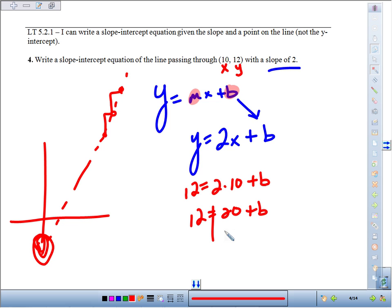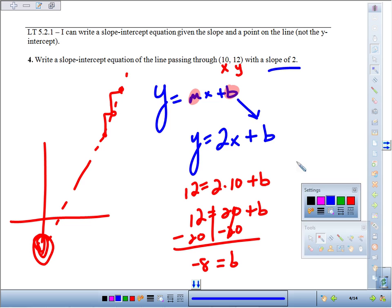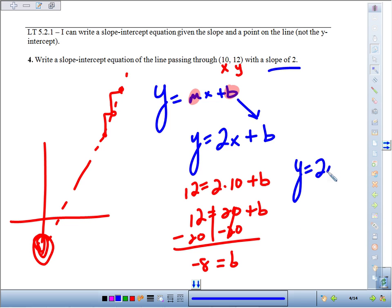So we subtract 20 on both sides, and we find our y-intercept is negative 8. Our full equation then becomes y equals 2x minus 8.